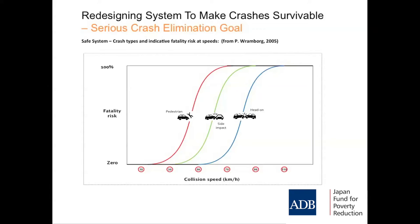These are very helpful rules of thumb for considering what is a safe speed in various circumstances. Where you have no medians, the speed shouldn't be above 70 kilometres an hour — and it's tougher in ASEAN with trucks and motorcycles, so actually lower than 70. At intersections, no one should be going through faster than 50 kilometres an hour. And wherever there are lots of pedestrians, the speed shouldn't be more than 30 kilometres an hour. These are important rules of thumb — how you achieve those speeds is challenging, but it can be done over time.